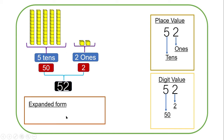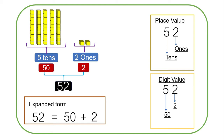Writing this number in expanded form means that we are going to show the digit values of the number 52 using an addition sign. So it means that we have got 50 plus two. We can see the place values of 52, the digit values of 52, and how we can write the number 52 in expanded form.